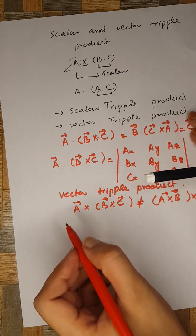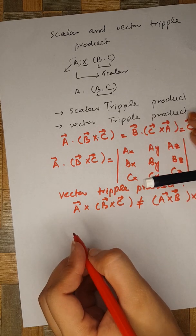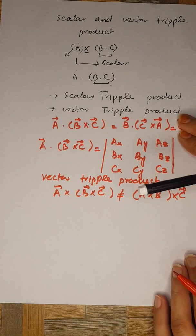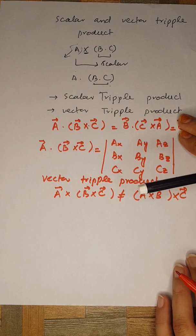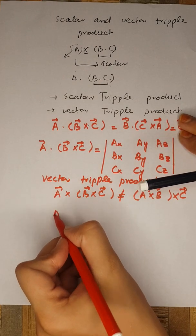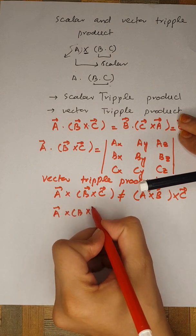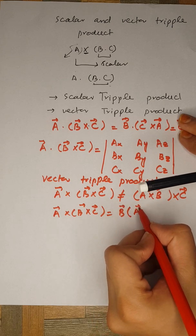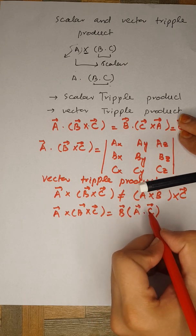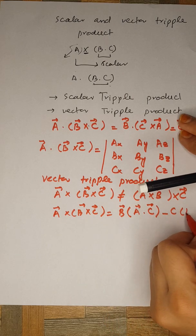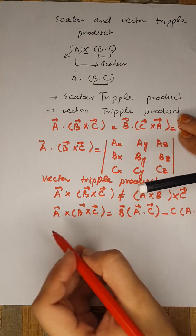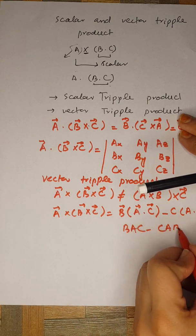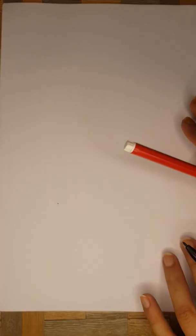It is important to specify which cross multiplication is to be performed first. By expanding the vectors a, b, and c in component form, it can be shown that a × (b × c) is actually equal to b(a·c) − c(a·b), which is sometimes called the BAC-CAB rule.